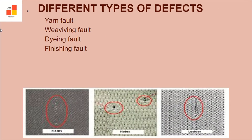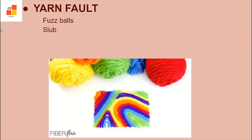Let's see different types of defects. The very first is yarn fault, which means coarse ends and fine ends form yarns. Fuzz balls are loose fibers originating from the fabric. Slub is an abruptly thickened location in a yarn because of soft twist.